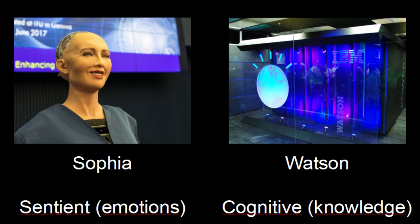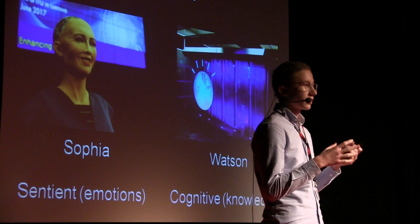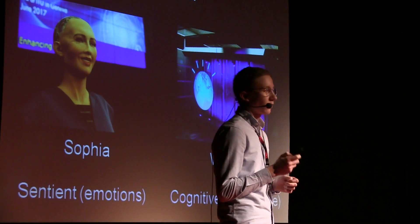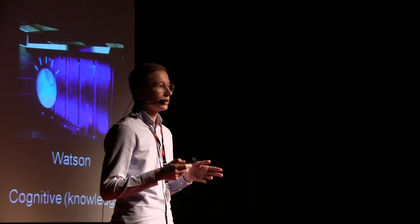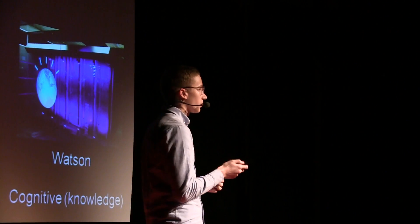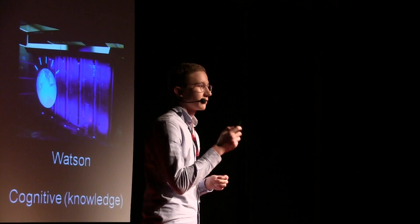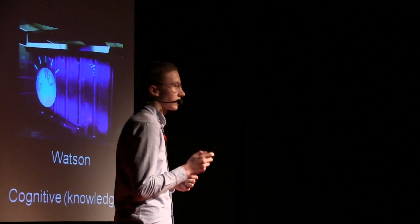The second artificial intelligence is Watson. Watson is a cognitive artificial intelligence, which means he understands broad knowledge and facts. The amazing thing Watson has achieved is becoming the first artificial intelligence to win an American game show called Jeopardy. In Jeopardy, you don't only answer questions about facts and broad knowledge, but you also need to understand pop culture and idioms, which have been extremely hard for artificial intelligence to master.